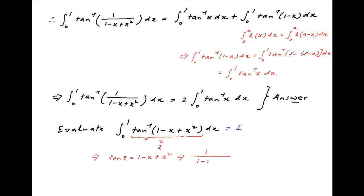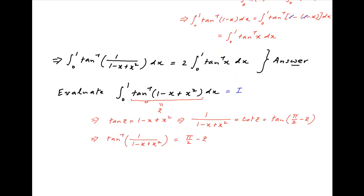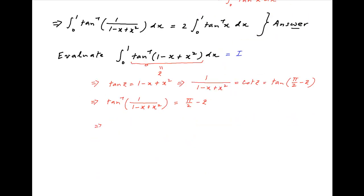And therefore, 1 upon (1 minus x plus x squared) is equal to cot of z. But cot of z can be written as tan of (pi upon 2 minus z). And therefore, tan inverse of 1 upon (1 minus x plus x squared) is equal to pi upon 2 minus z. And therefore, the integrand of I, which is z, is equal to pi upon 2 minus tan inverse of 1 upon (1 minus x plus x squared).